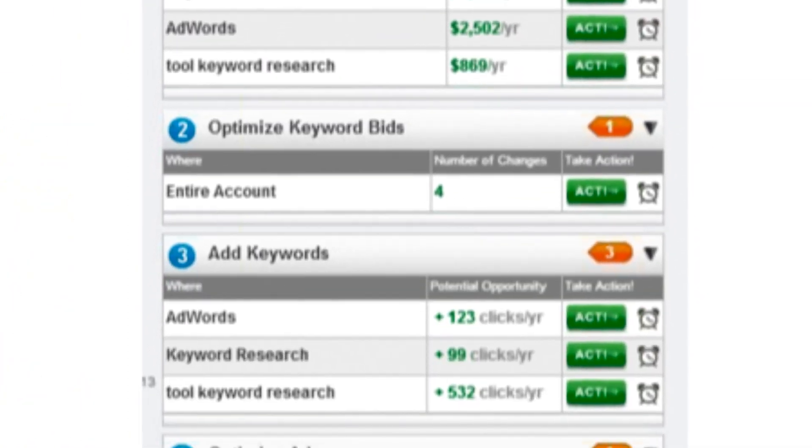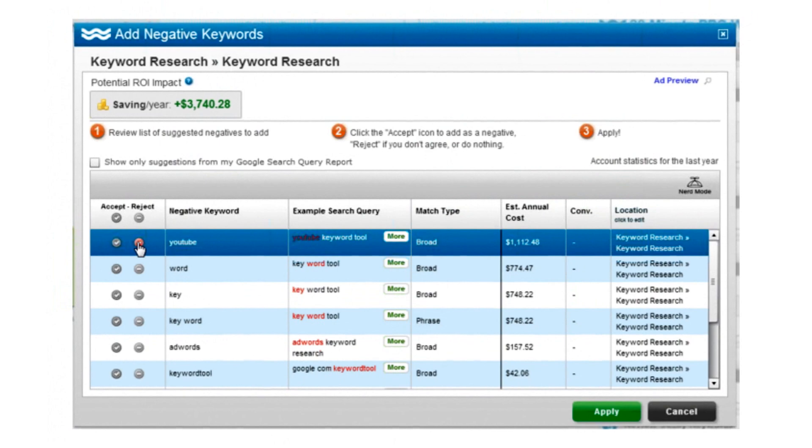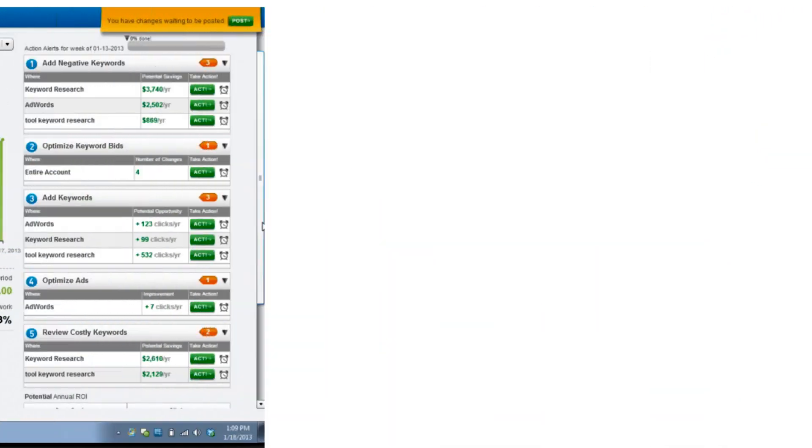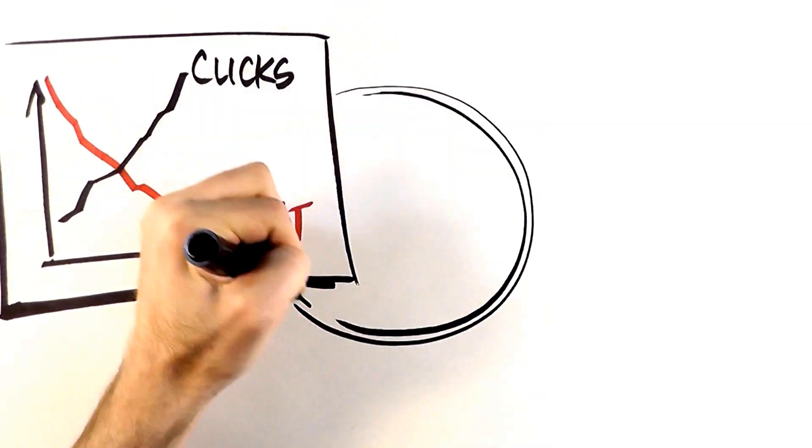From raising and lowering bids, optimizing text, and reviewing keyword performance and costs, WordStream suggests the best changes to make, even calculating the increased clicks and savings you could gain.